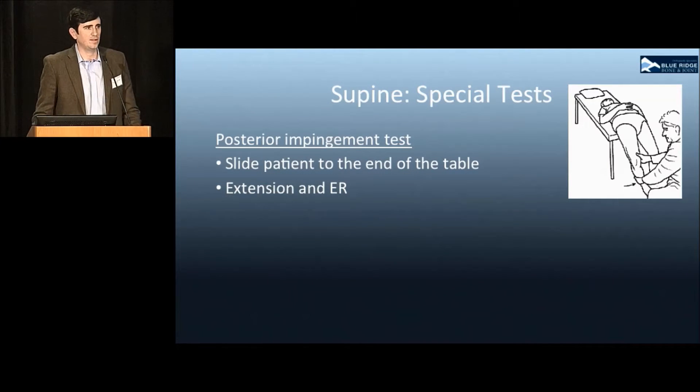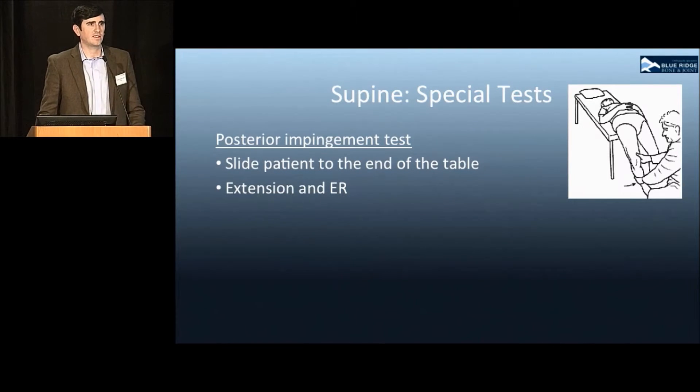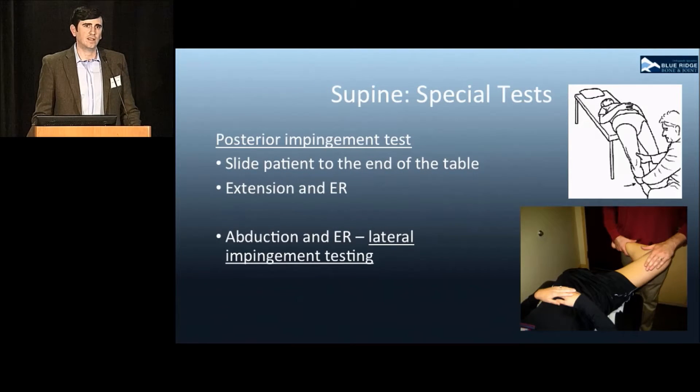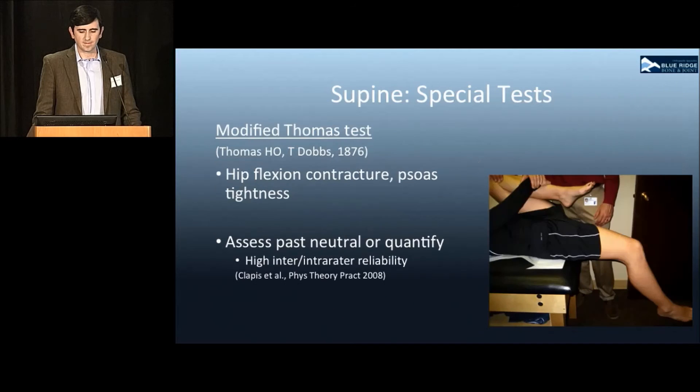The posterior impingement test is performed by sliding the patient down to the end of the table. Extension and external rotation engage the posterior aspect of the acetabulum and hip. Lateral impingement testing is carried out by abduction, external rotation, and bringing the hip up.